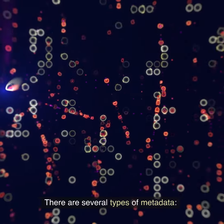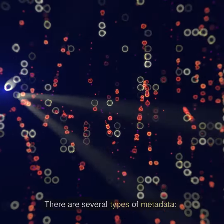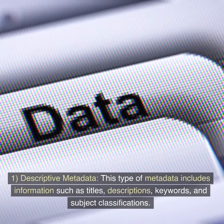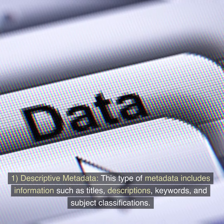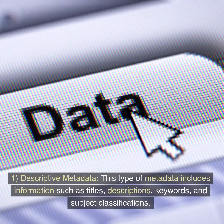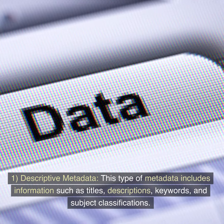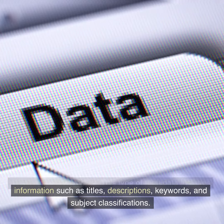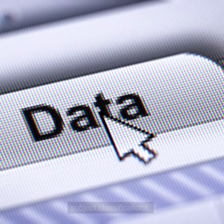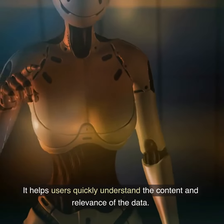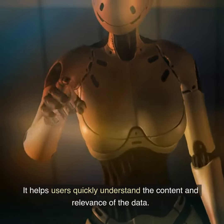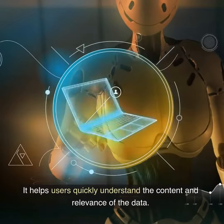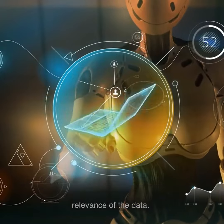There are several types of metadata. 1. Descriptive Metadata: This type of metadata includes information such as titles, descriptions, keywords, and subject classifications. It helps users quickly understand the content and relevance of the data.